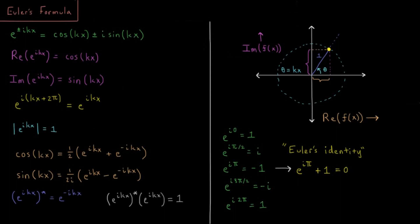This video will review Euler's formula for complex exponentials. So we have a complex exponential here, e to the plus or minus ikx. It's an exponential because it's e to the something, and complex because we have i, the square root of negative one, up in our exponent.